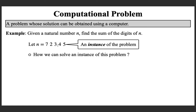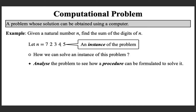Now the question is, given this problem, how can one solve an instance of it? Meaning, given an instance like 72,345, how will you find the output? For that, we need to analyze this problem to see how a procedure can be formulated to obtain the solution. Given an arbitrary number, how will you automatically find its sum of digits? Maybe we can try to get a procedure for this particular instance — you need to find the sum of the digits of 72,345.